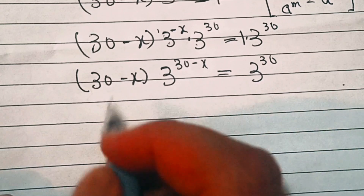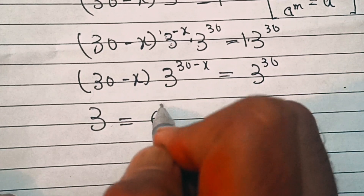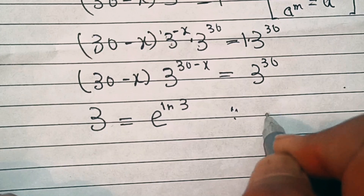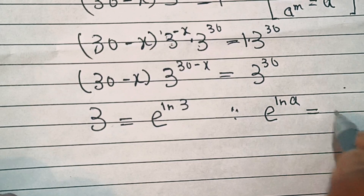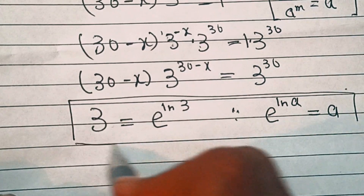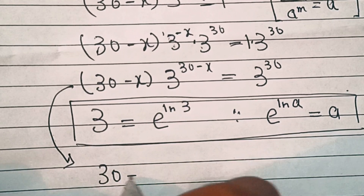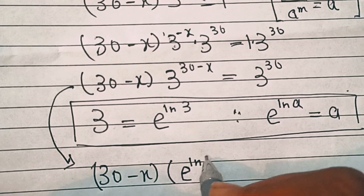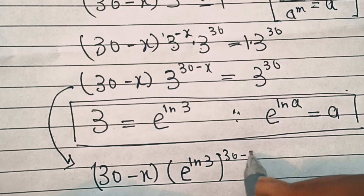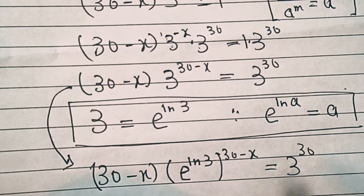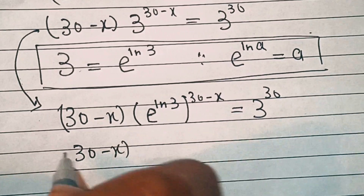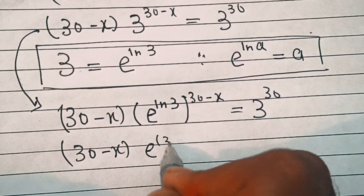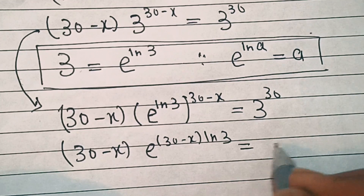Now to further simplify this, we'll write 3 as e to the power of natural log of 3, because e power natural log of a is equal to a. So 3 power 30 minus x becomes e power ln(3) times (30 minus x), and this equals 30 minus x into e power (30 minus x) ln(3) equal to 3 power 30.